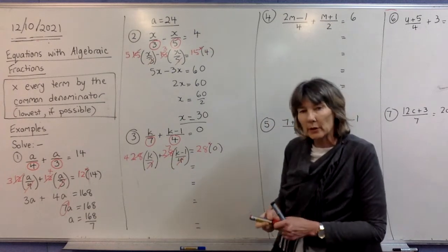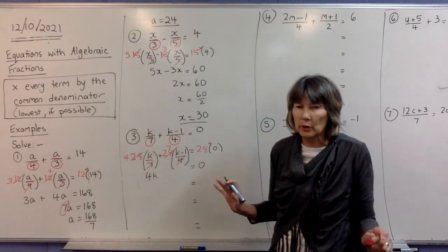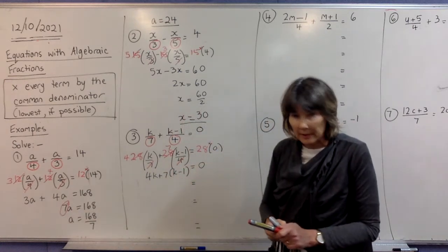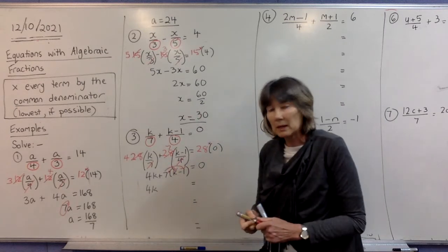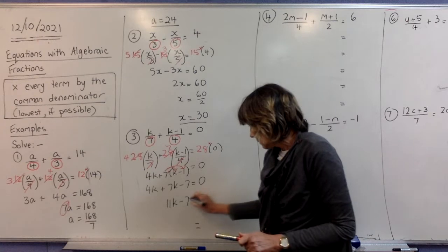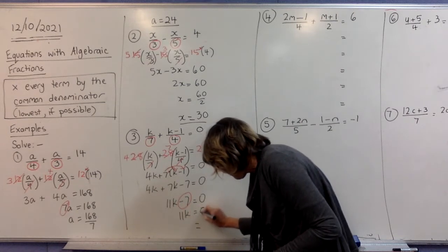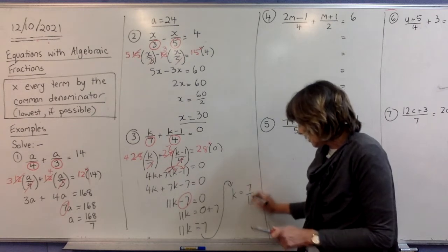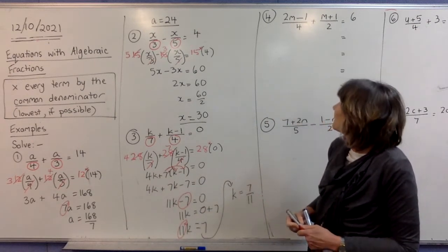28 times 0 is nothing. Now we've got 4k. Be careful here — don't try to expand yet, just write what you see: a 7 outside (k minus 1). You're going to expand in the next line. So we copy our 4k and then expand to get plus 7k minus 7. Collecting like terms and moving the number to the other side gives us 11k equals 7, so k equals 7 over 11.